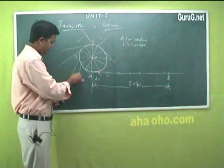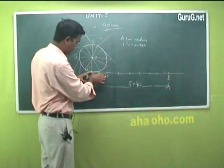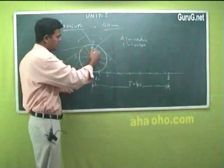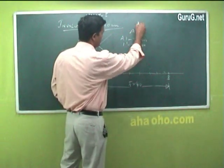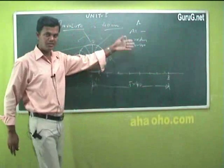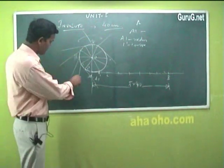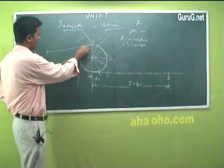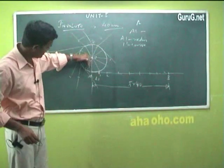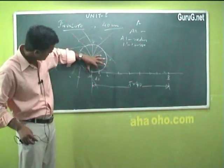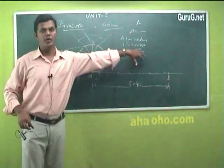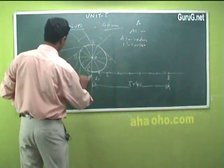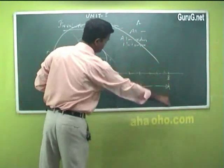It goes on the same way with A1, A2, A3, A4 radii up to the 12th point. Whatever tangent line you take at each point, you keep on cutting arcs. You can visualize that the distance is first small, then bigger, then bigger, and so on. You cut arcs on the tangent lines and finally the curve comes out like this, spiraling outward.